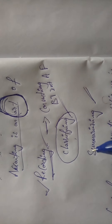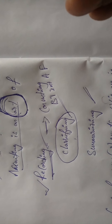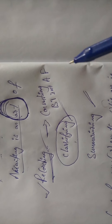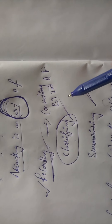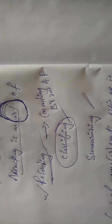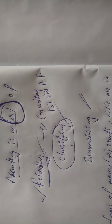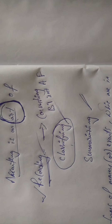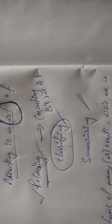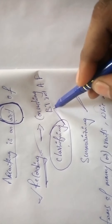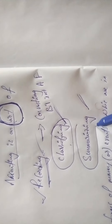In classifying, all the recorded business transactions are classified into different accounting heads. For example, all purchase-related transactions are mentioned under the purchases accounting head, all sales activities under the sales accounting head, and all cash-related accounts under the cash accounting head. Likewise, we classify all the recorded business transactions — that is the classifying step.